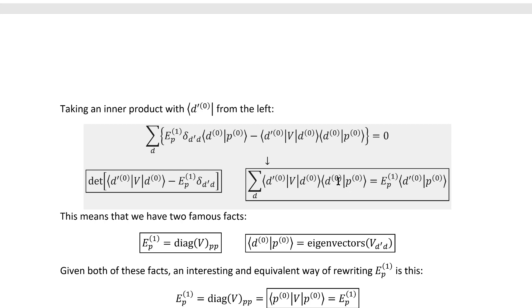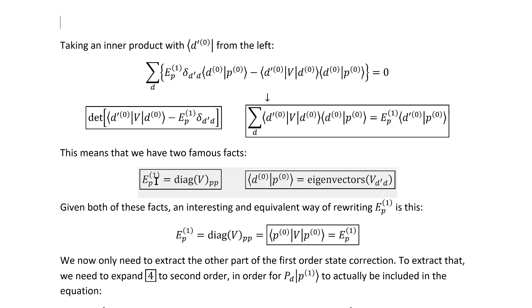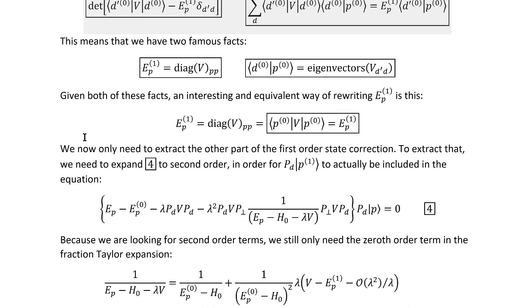And with that, we can also use that first formula we got from expanding equation number three to linear order because the only missing information we needed to do that was, again, these coefficients. So in short, we have reduced calculating the first order corrections to the energy eigenvalues and resolving the state ambiguity to just diagonalizing this matrix. With that, to complete our study at the first order, all we need to do is extract the other part of the first order state correction. To extract that, we need to expand equation four to second order because only then will the degenerate part of the first order correction be included in the equation at all.